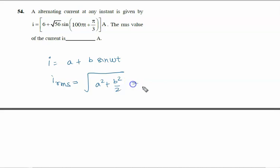So it is root of a², where a equals 6², plus b², where root 56² equals 56, divided by 2.